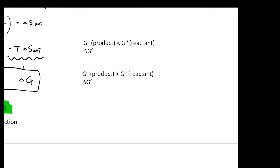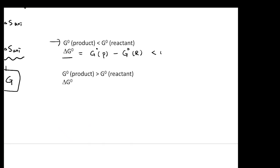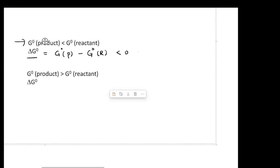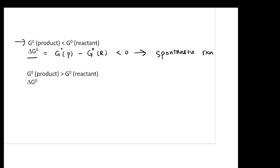So if today for a chemical reaction they tell you the G-naught of your reactants and products, then you can calculate your delta G-naught, which is actually your G-naught product minus your G-naught reactant. Then if this thing is going to become negative, the condition is that your G-naught product is smaller than your G-naught reactant. If delta G-naught is negative, you have a spontaneous reaction — you expect that to happen, meaning you are going to have more product form.